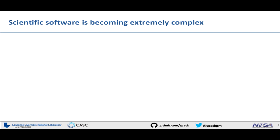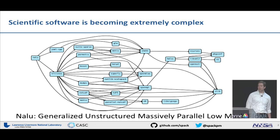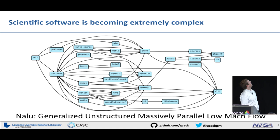Scientific software is really complex. How many people have actually looked at all the dependencies of the codes they use on the supercomputers? Not that many. If you look at something like Nalu — this is an unstructured, massively parallel, low Mach flow code — the code itself is over here on the left. The rest of that stuff is all the dependency libraries that the code builds on.